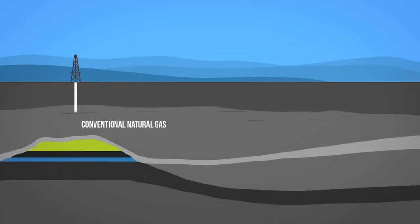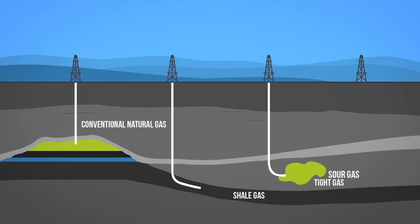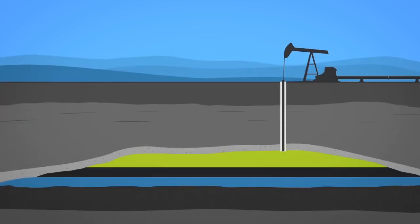Conventional natural gas can be extracted through drilling wells. Unconventional forms of natural gas, like shale gas, tight gas, sour gas, and coal bed methane, have specific extraction techniques. Natural gas can also be found in reservoirs with oil and is sometimes extracted alongside oil. This type of natural gas is called associated gas.